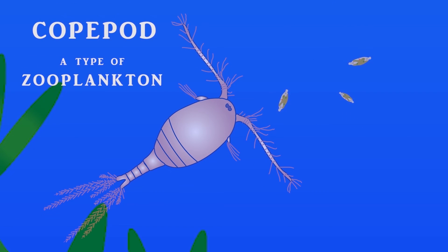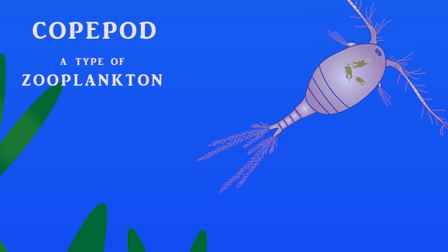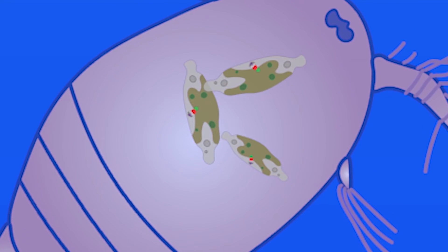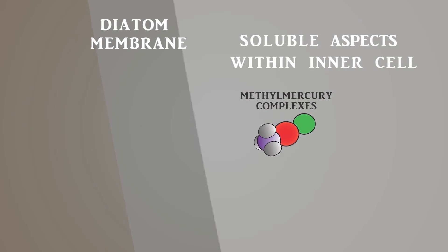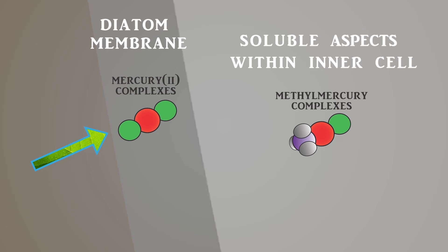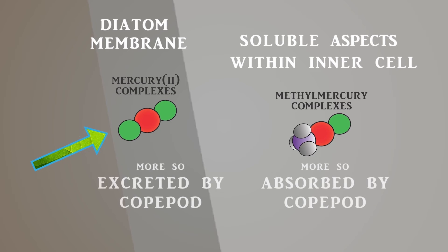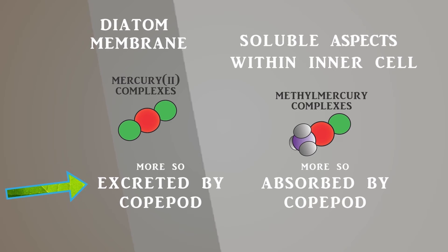Then a zooplankton, such as a copepod, will consume that diatom. Since the methylmercury is associated with the soluble aspects of the diatom, the copepod absorbs that methylmercury more easily than, say, mercury II complexes, which become bound to the particulate cellular material of the diatom, thus being less digestible and excreted more by the copepod.